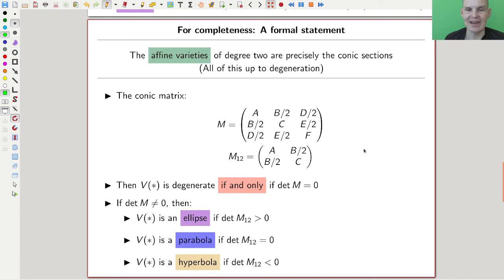And the converse is also true, counting the degenerations as conic sections as well. And the way to check that is actually pretty nice. So this is what people call the conic matrix. It's this thing M here. It just has all the variables. If you have an off diagonal, you just divide by two to have the symmetry of the matrix. And you can check. So V was our notation for an affine variety.